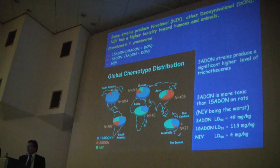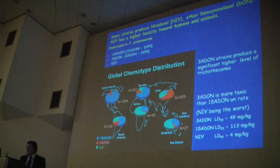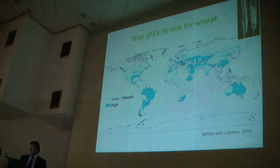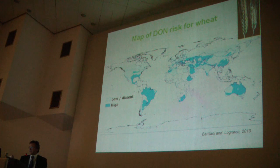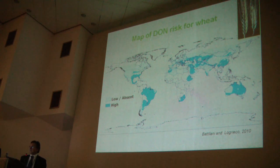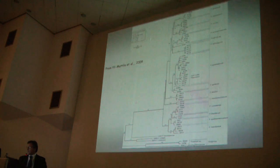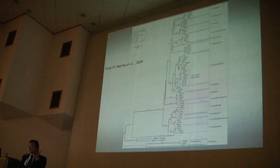In Europe, as you can see in this slide, the most prevalent chemotype is 15-acetyl deoxynivalenol. Looking at the mycotoxicological risk map related to DON, according to different meteorological conditions in Europe there are certain areas where DON has a higher risk of occurrence.